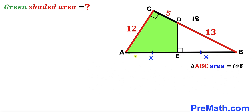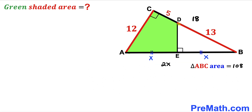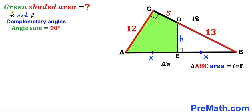Next, let's label segment AE as x, so segment BE is also x, making the whole length AB equal to 2x. We also label the perpendicular DE as lowercase h. Let's assume alpha and beta are two complementary angles, meaning alpha plus beta equals 90 degrees.